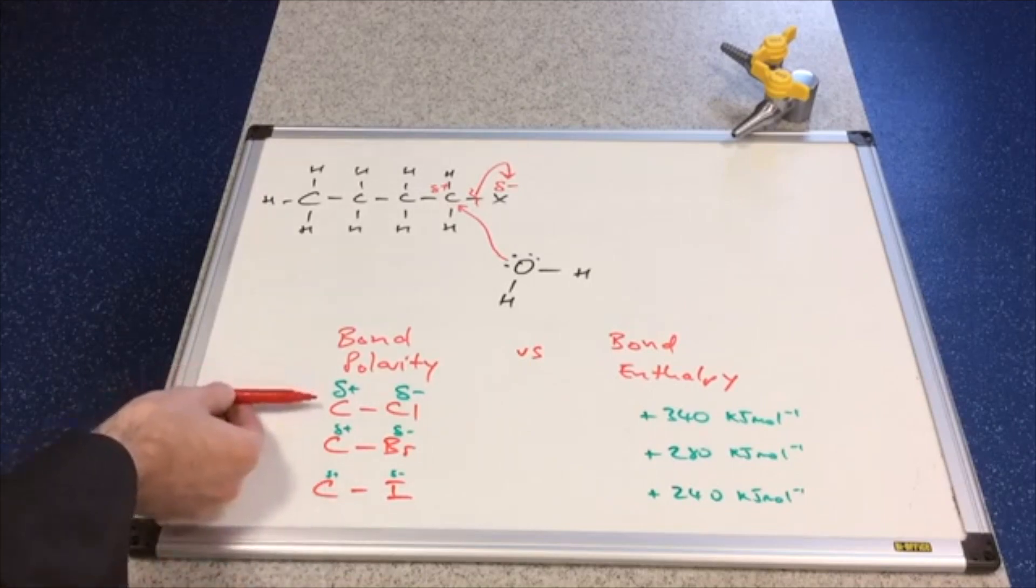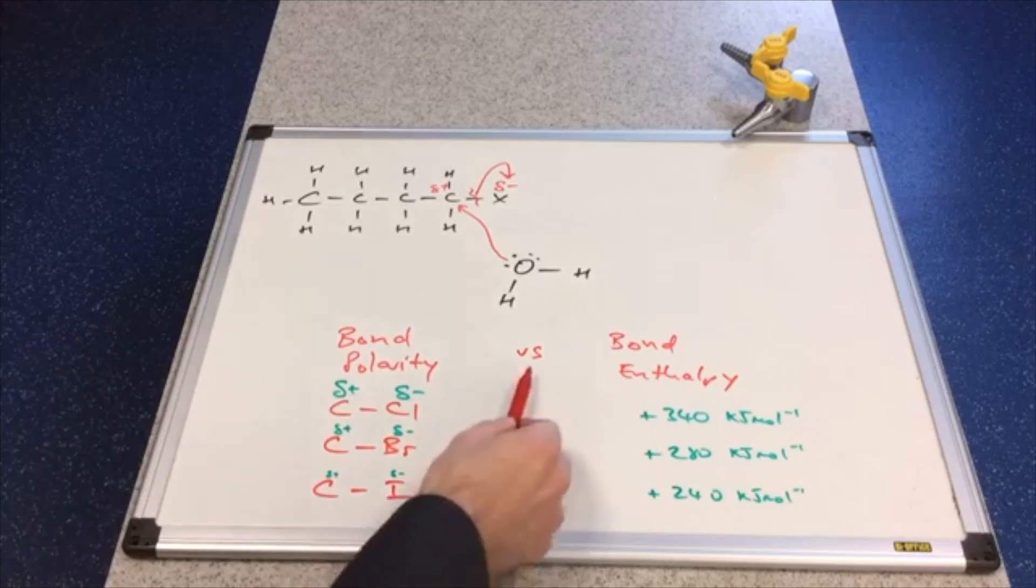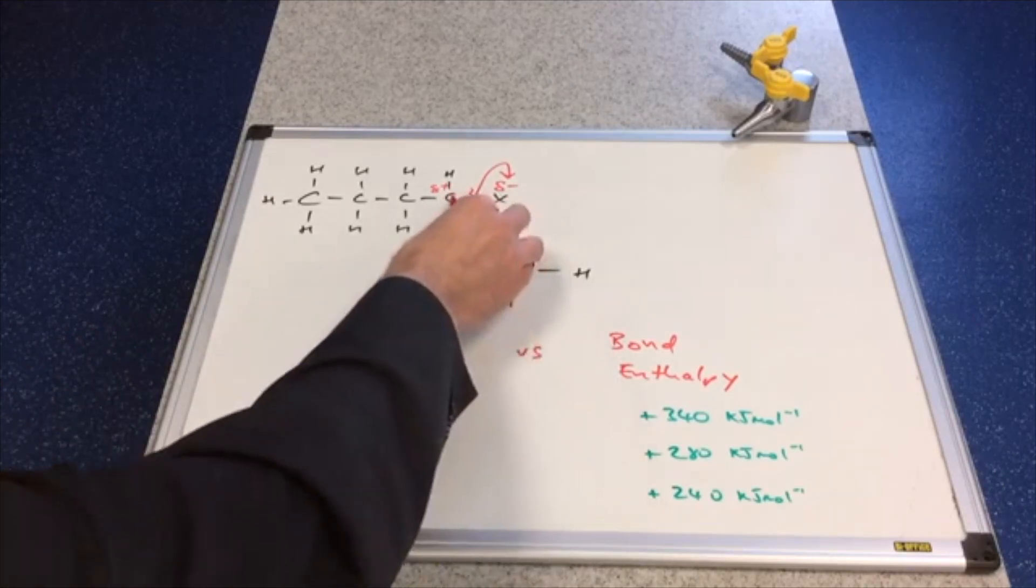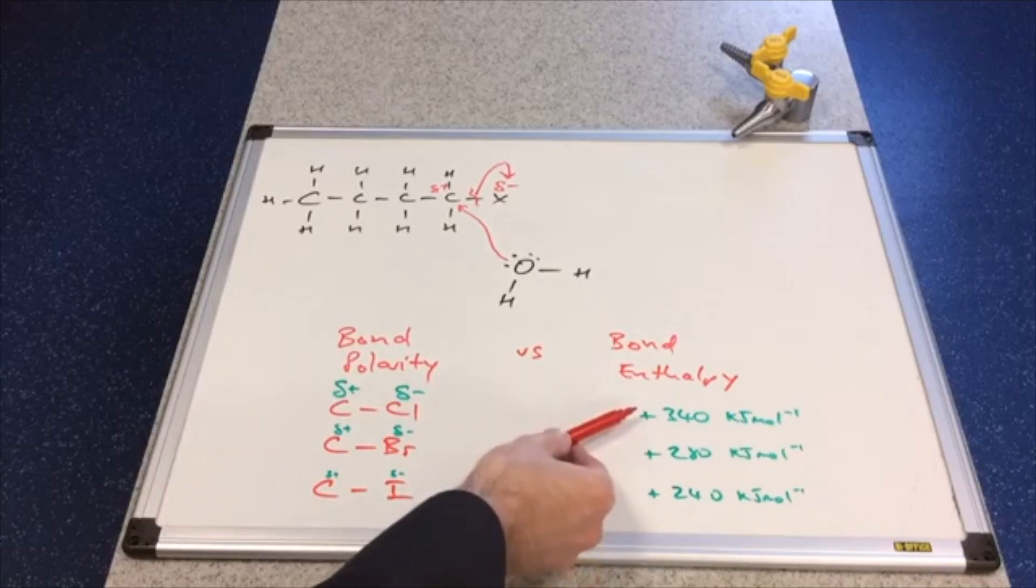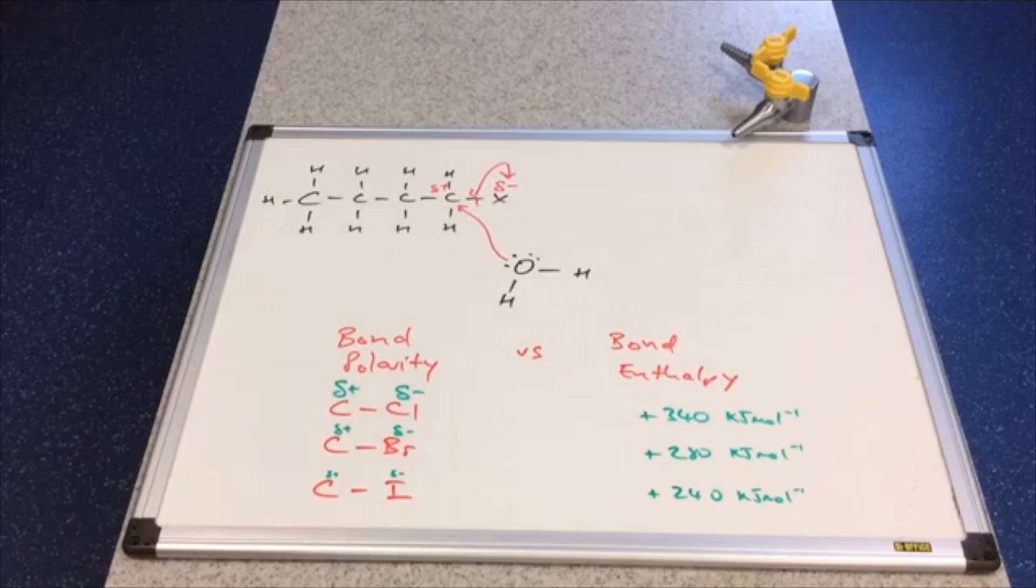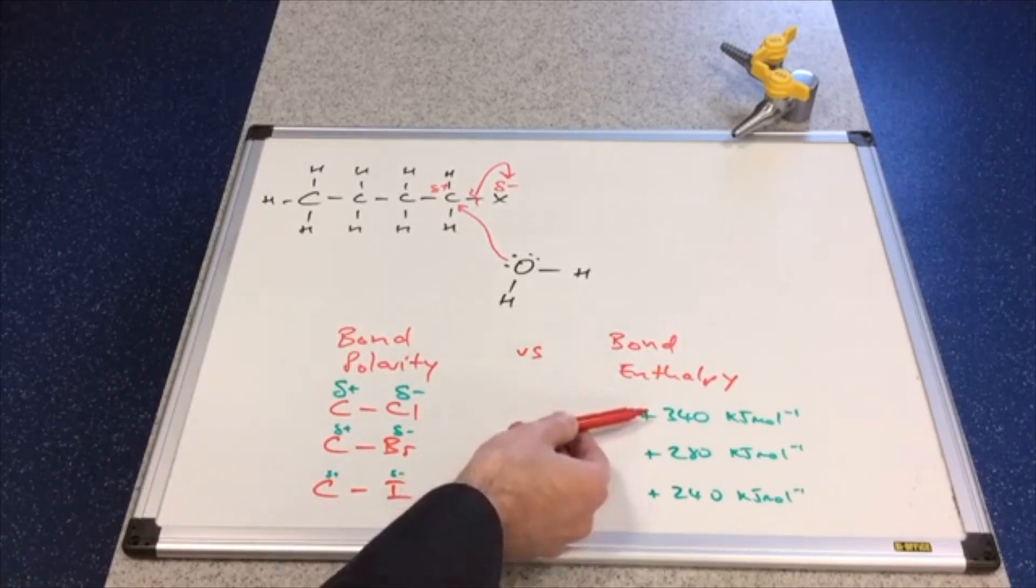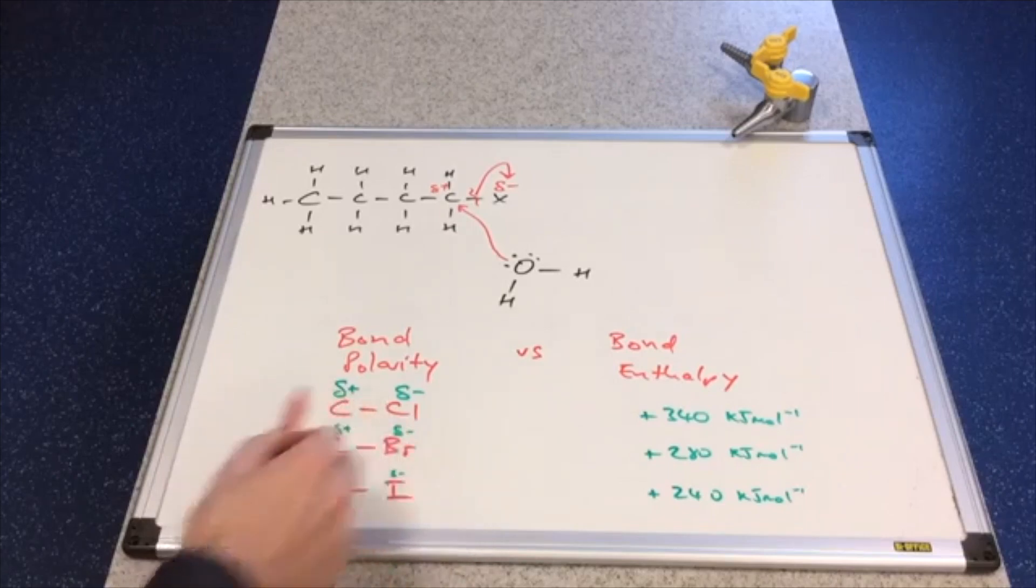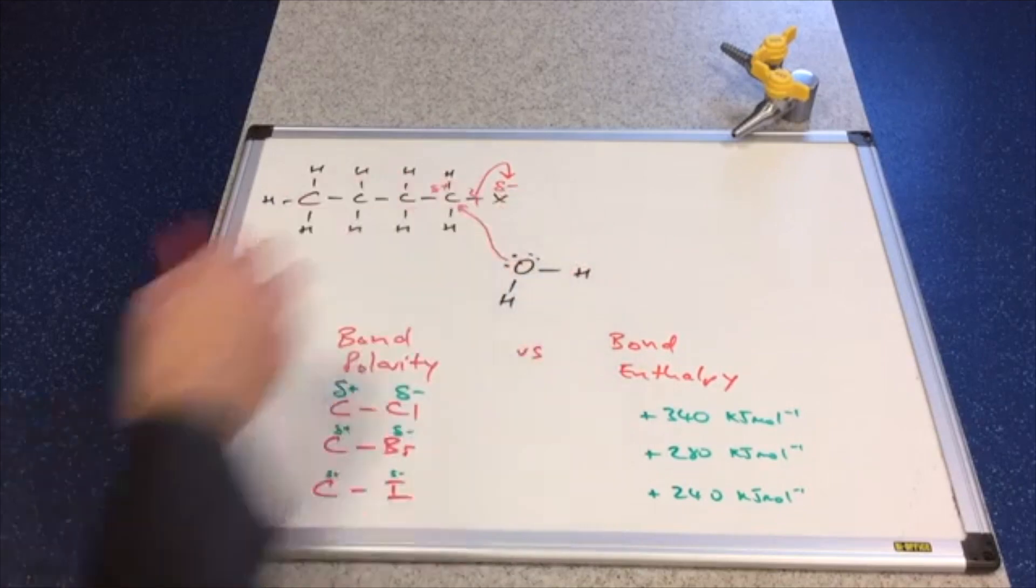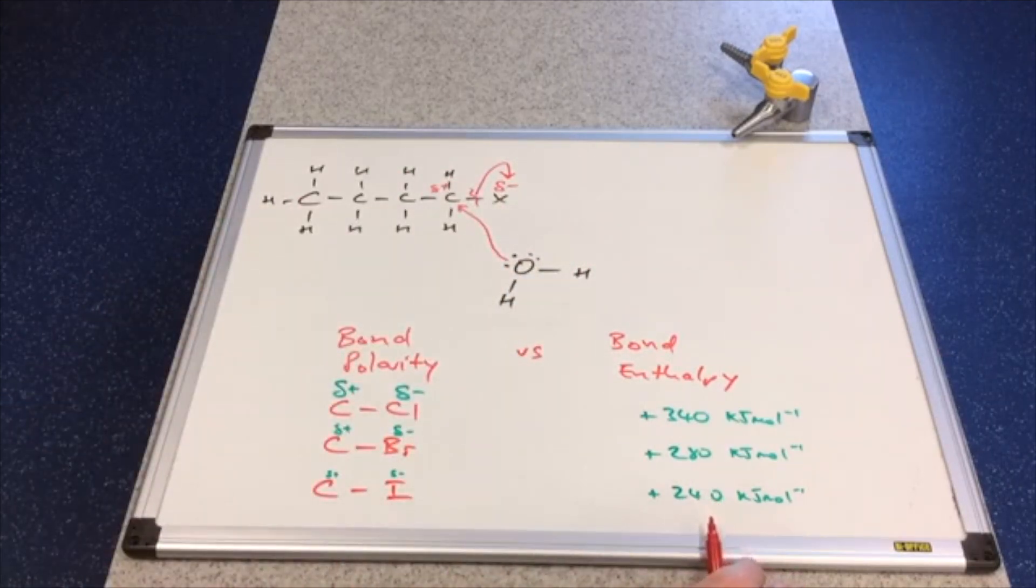You might think this should react fastest. However, the other factor at play is the bond enthalpy - that's the amount of energy it takes to break a mole of this bond. The C-Cl bond has the largest bond enthalpy; it takes the most amount of energy to break a mole of this bond. Now, if you remember back to the times that were recorded, the iodobutane had the fastest rate. What that's telling us is, yes, the dipole is very small compared to the others, so the nucleophile is not as strongly attracted to that carbon. But because the bond's got a low bond enthalpy - in other words, it's easy to break - that makes the reaction faster.